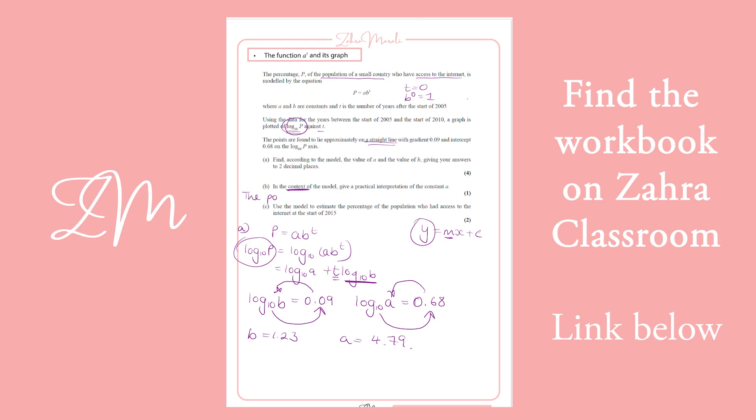It means the population, so the constant is going to be with access to the internet. And it's going to be initially, but what is the initial here? The initial here is the start of 2005. Access to the internet at the start of 2005.